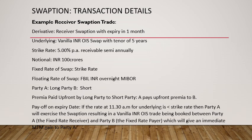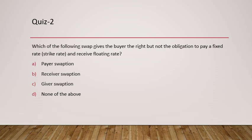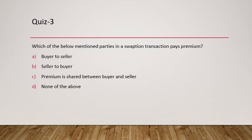Let me now go through some quick quiz questions. First: which of the following is considered the strike rate for a swaption contract? The answer is the fixed rate. Second: which type of swaption gives the buyer the right but not the obligation to pay a fixed rate and receive the floating rate? That is a payer swaption — the answer is A. Third: which party in a swaption transaction pays the premium? It is always the buyer to the seller.